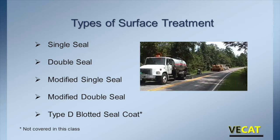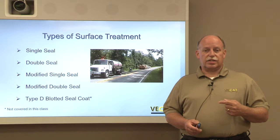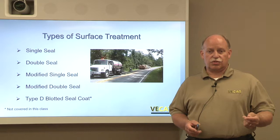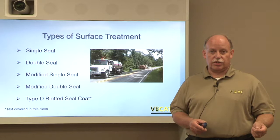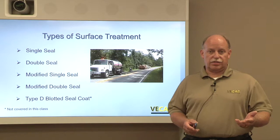There are different types of surface treatments. In those early days, there was the single seal and the double seal — from the 1930s into the early 1980s, most surface treatments were either a single seal, typically for very low-volume roads, or a double seal for slightly higher-volume roads. We've since moved to what we call modified surface treatments: a modified single seal and a modified double seal. There is also a type D blotted seal coat, which is specifically for when a new roadway is being built from construction and it's applied as the final surface — but that's not part of the class we're discussing today.